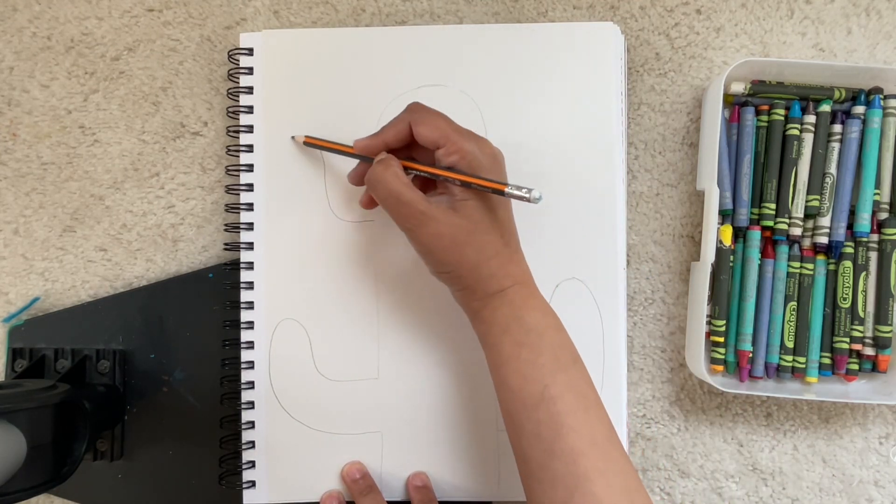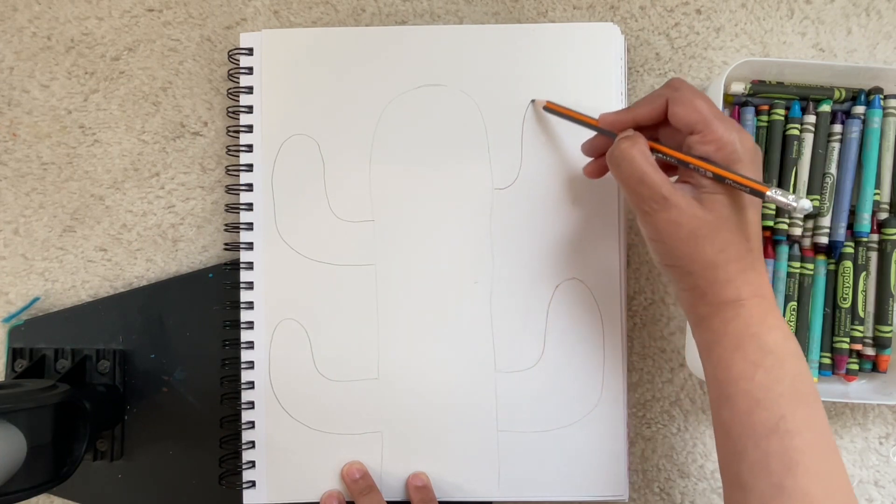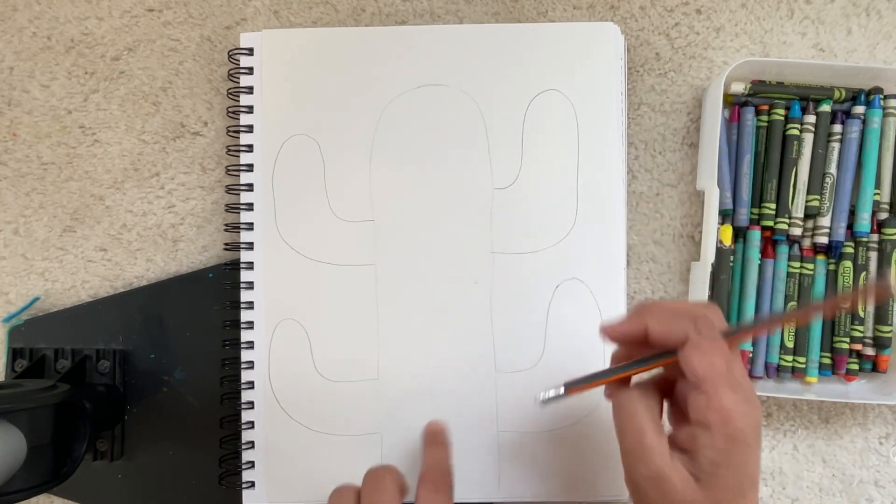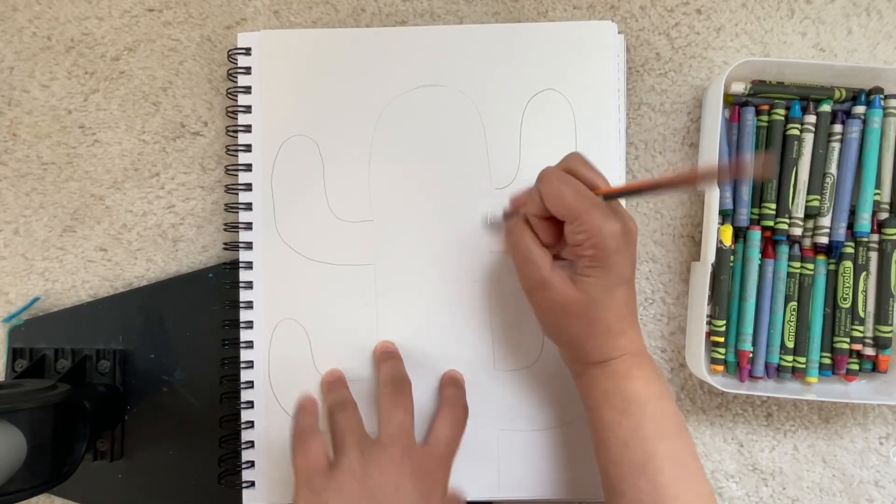Then I'm going to go around and draw another part of the cactus and another part of the cactus. I'm going to go in and erase anywhere the lines are meeting.